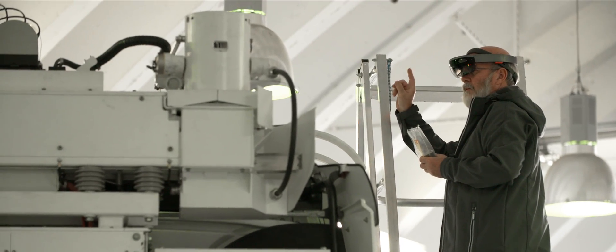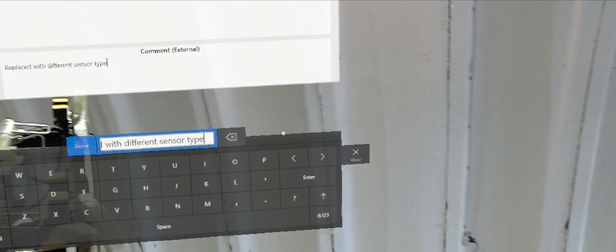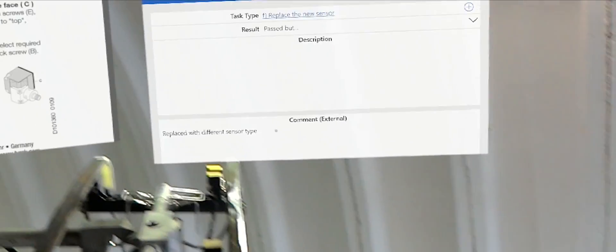In the future, we want to further optimize the documentation process. For example, optical character recognition, OCR, can be used to automatically input serial numbers and rating plates.